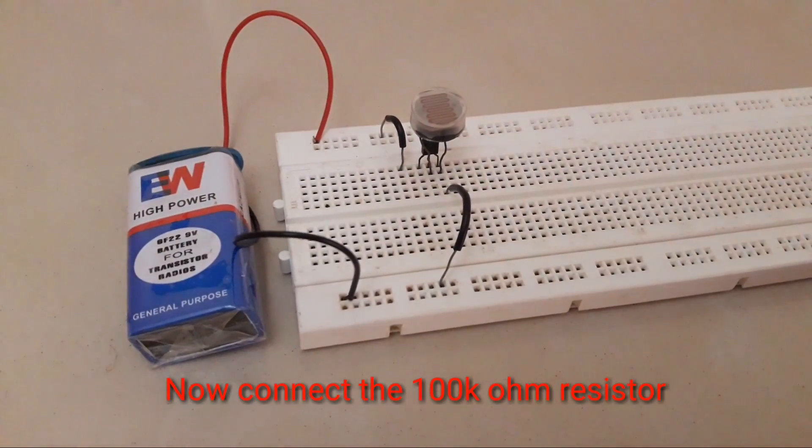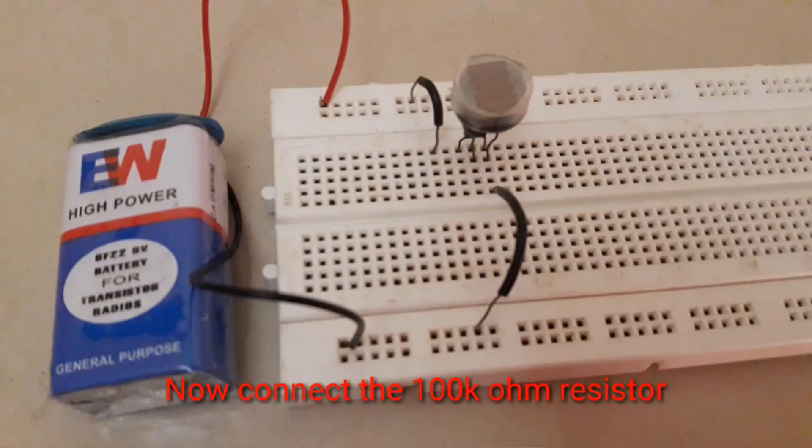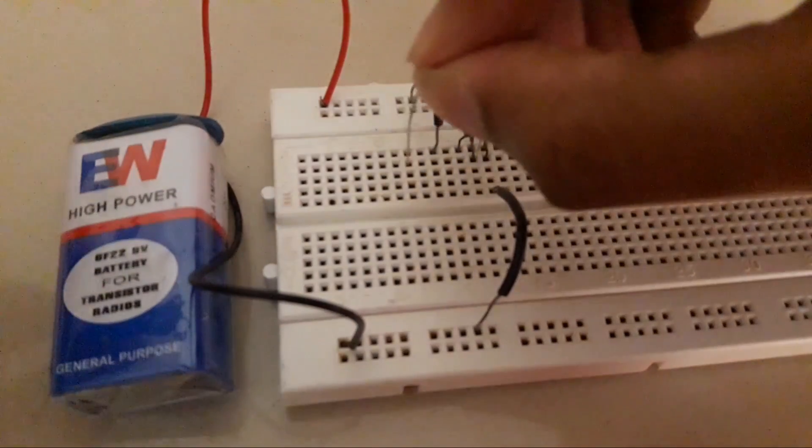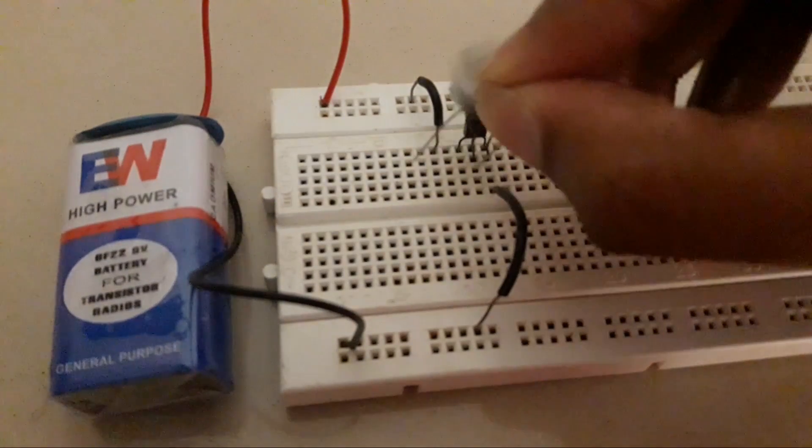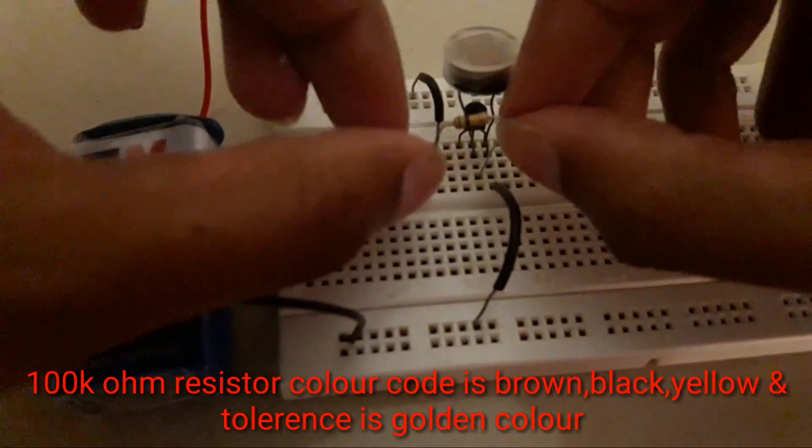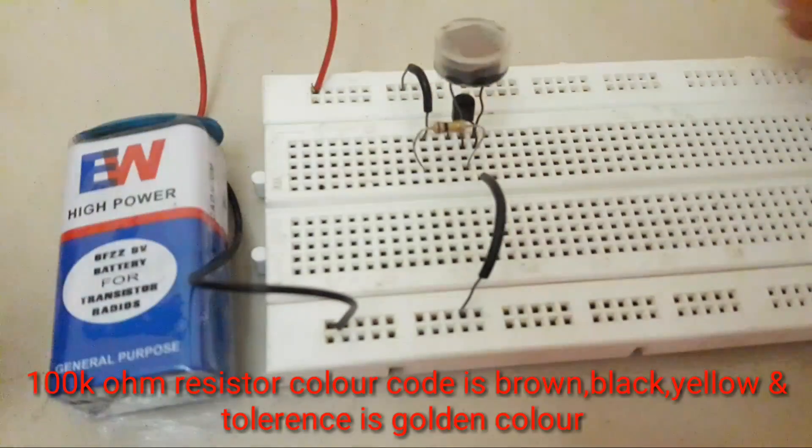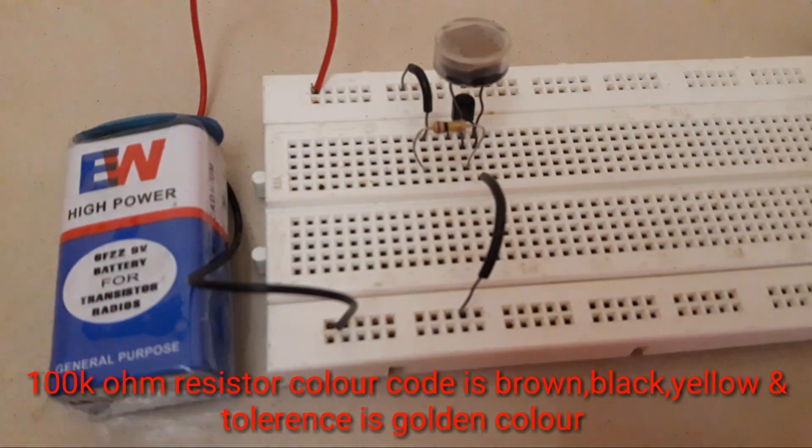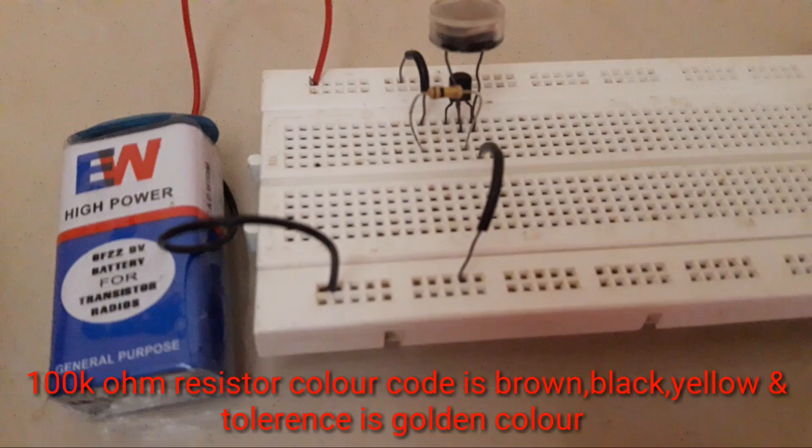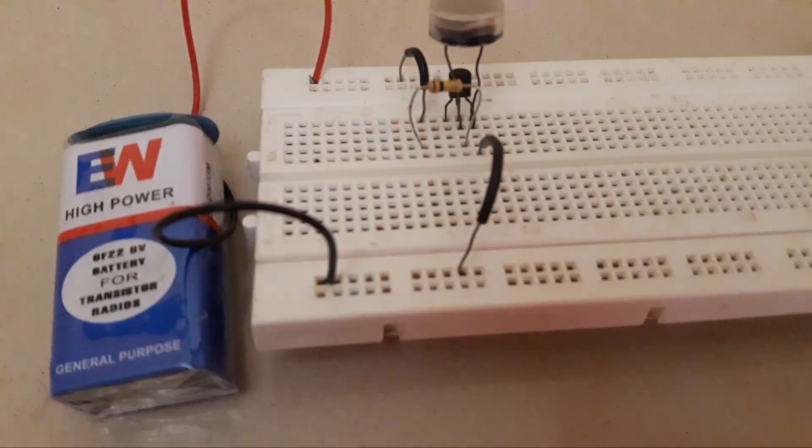Now let's connect the 100 kilo ohm resistor from the base of the transistor to the positive side of the battery.